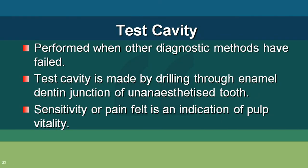With EPT, always test the normal tooth first, then the tooth in doubt. If normal teeth respond at readings of 4–6 but the suspect tooth responds only at 15–16 or not even at 20, it indicates a non-vital tooth. If the normal tooth responds at 4–5 and the suspect tooth responds around 8–9 with lingering pain after stimulus removal, that indicates irreversible pulpitis.